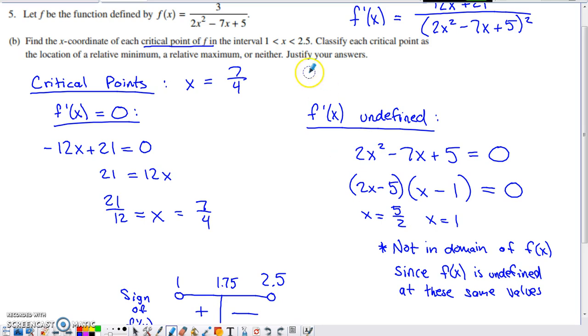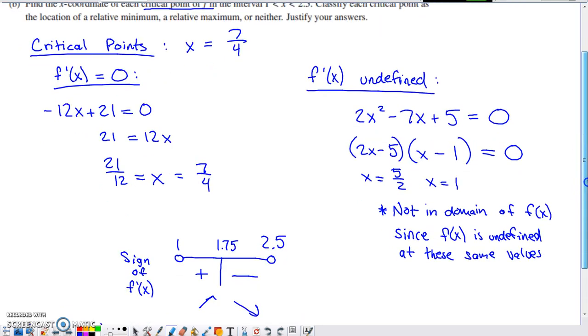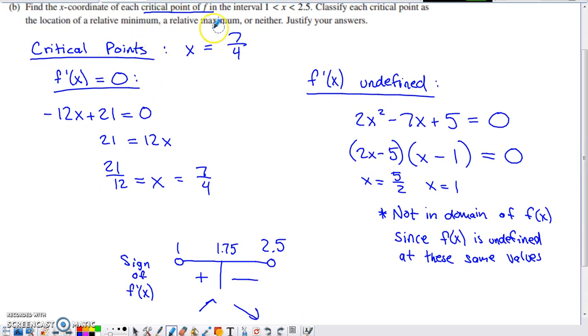So if we were concerned with a range of values outside of 1 to 2.5, we would have to build a bigger sign chart than this. The derivative still has the potential to change signs at this x and this x, although they're not technically critical points because they're not included within the domain of the function. But when you're trying to wrap this up, do we have a relative min or relative max or neither at these x's?